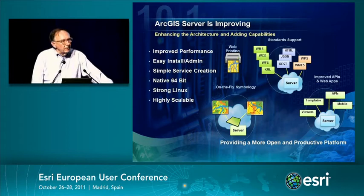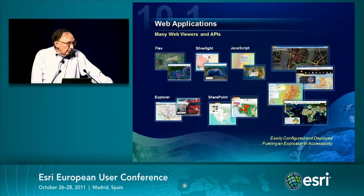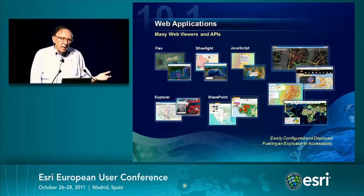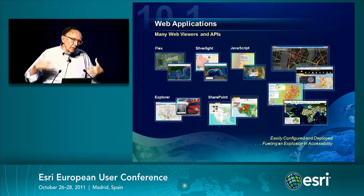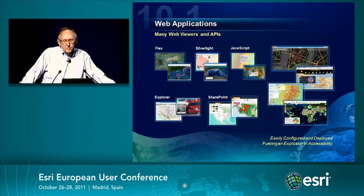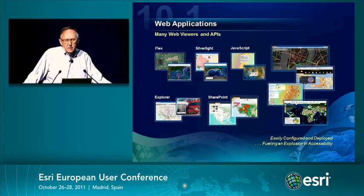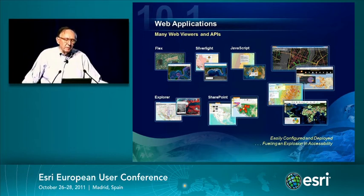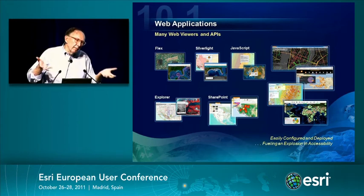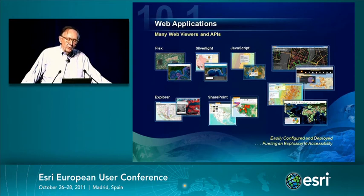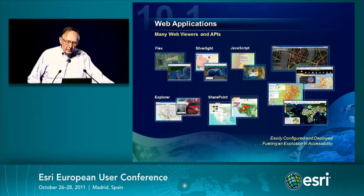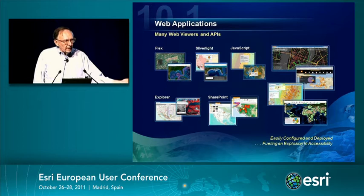Web apps are becoming a major piece of the ArcGIS system: Flex, Silverlight, JavaScript, SharePoint integration, and ArcGIS Explorer. These are web applications that you can download, customize, and extend — open-source in nature. Many users ask why we don't just go with Flex or just Silverlight or just JavaScript. What we're doing is supporting multiple environments with multiple teams so that you can choose as you wish. In the web world there are many ways, and these are freely configured and work directly with any GIS server, fueling an explosion of accessibility.